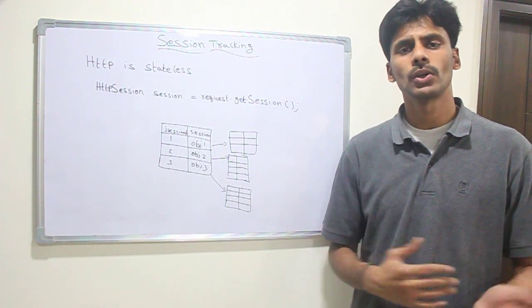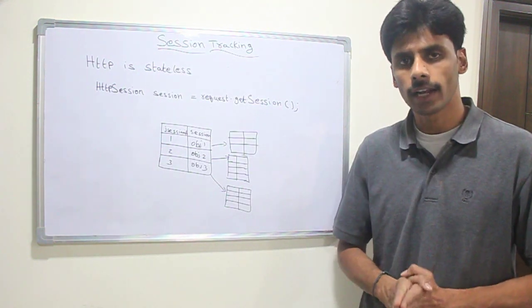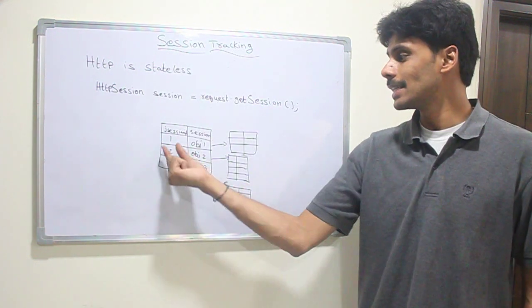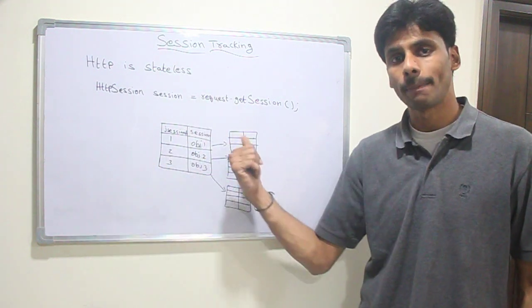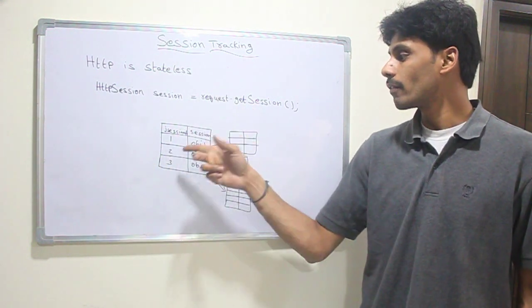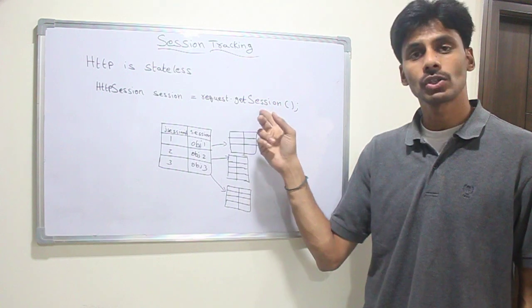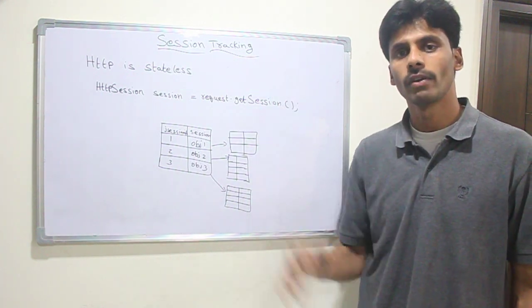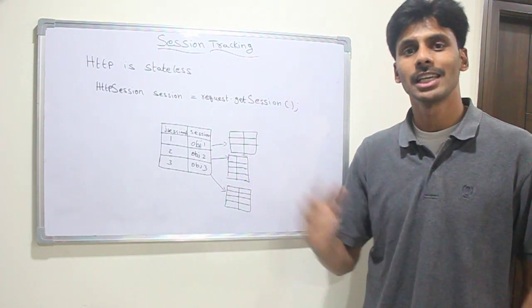When the second request comes in, now he's browsing through the home page, he's clicking on a particular link, the browser sends this JSessionID which was created during login back. Now the container will, if you call request.getSession() in your home page servlet or even in your 50th JSP in your application,